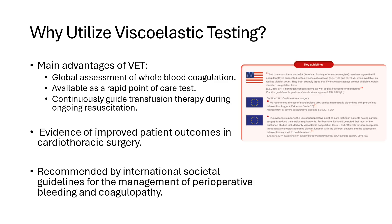So why utilize viscoelastic testing? The main advantages of TEG and ROTEM over standard coagulation testing are: first, they allow for global assessment of blood coagulation — the initiation, the strength of the clot, and the stability of the clot in vivo. These tests can identify abnormalities in the coagulation cascade, the contribution of platelets and fibrinogen to clot strength, and the presence or absence of fibrinolysis. Both tests are available as point-of-care tests that can be rapidly performed and evaluated in real time — in the emergency department, the trauma bay, the operating room, or the blood bank. Lastly, these tests can guide transfusion therapy and the dynamic assessment of coagulation during active resuscitation.